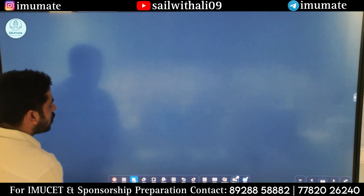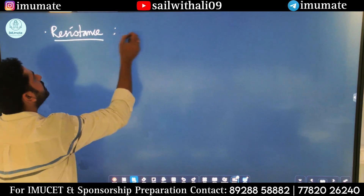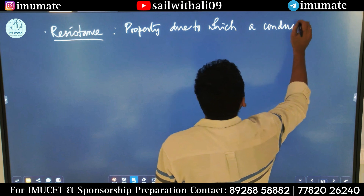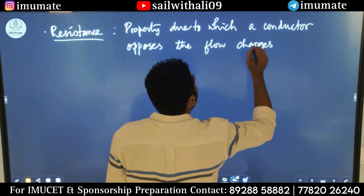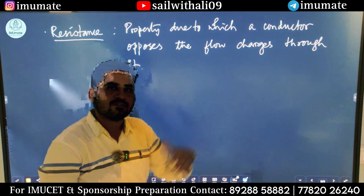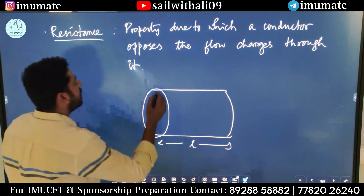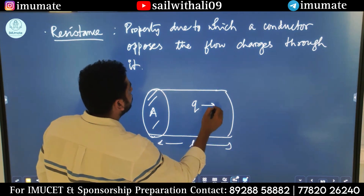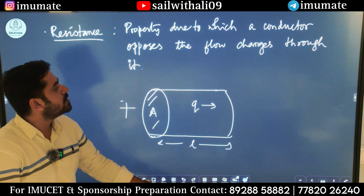Now let us talk about resistance. What is resistance? Resistance is the property due to which a conductor opposes the flow of charges through it. Let's say this is the conductor — length is L, the area of cross-section is A. Now electrons are the charges flowing. Let's say Q amount of charge is flowing from this to this direction, from the negative to positive pole. Resistance is the property due to which a conductor opposes the flow of charges through it.